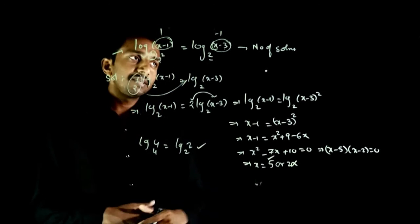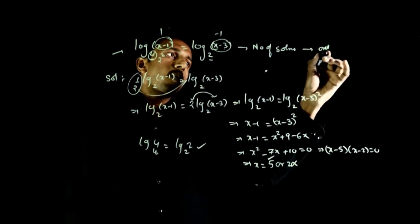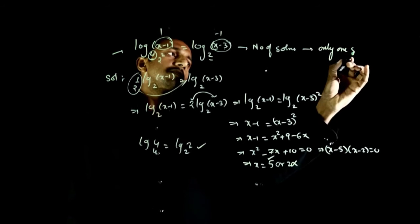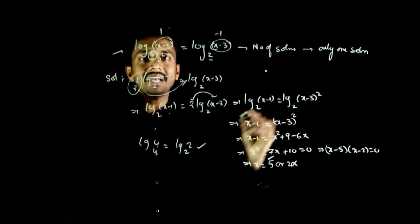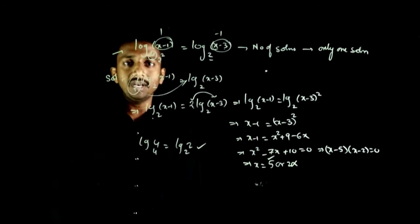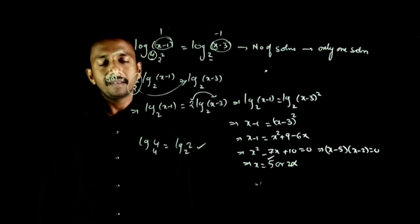So only x=5 is the answer. The number of solutions is one. This equation does not have two solutions; it has only one solution. Thank you.